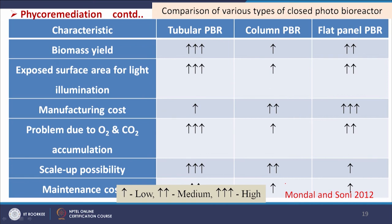Comparing closed photobioreactor types — tubular, column, and flat panel: biomass yield is maximum in tubular PBR, followed by flat panel, then column PBR. Light illumination exposed surface area is maximum in tubular, followed by flat panel and column. Manufacturing cost is maximum in flat panel PBR, followed by column, then tubular. Problems due to O2 and CO2 accumulation are maximum in tubular PBR. Scale-up possibility is very high for tubular PBR, followed by column, while flat panel has very low scale-up potential. Maintenance cost is medium for tubular and low for column and flat panel PBR.